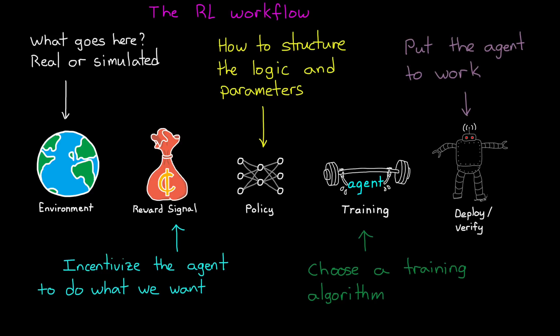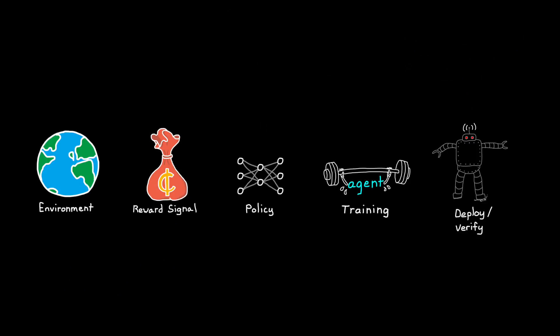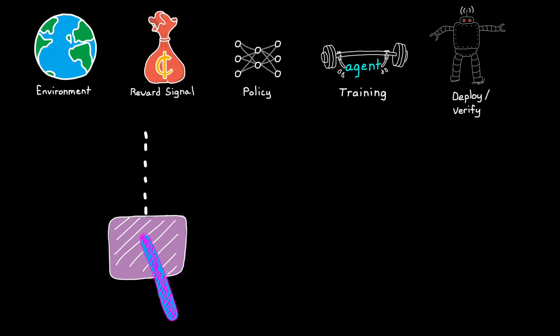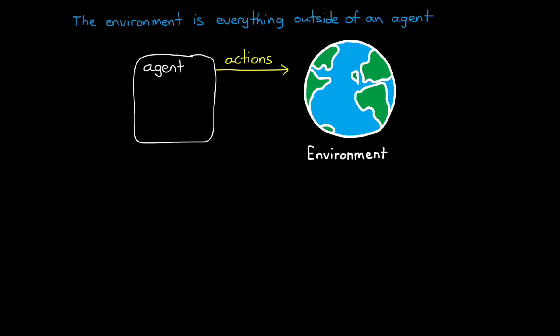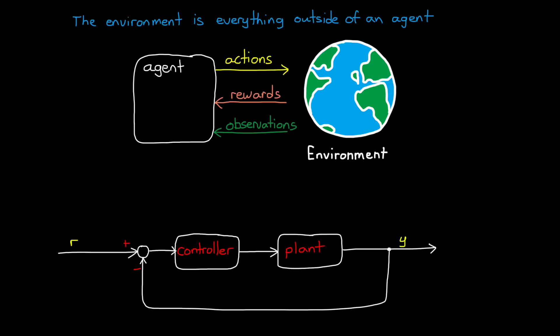And to put this workflow into perspective, let's think about each of these steps in the context of two examples, balancing an inverted pendulum and getting a robot to walk. So let's get to it. The environment is everything that exists outside of the agent. Practically speaking, it's where the agent sends actions, and it's what generates rewards and observations. I think this concept is a bit confusing at first, especially coming from a controls background, because we tend to think of the environment as everything outside of the controller and the plant.